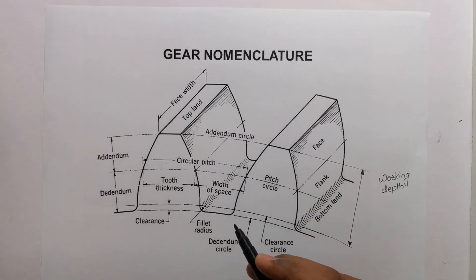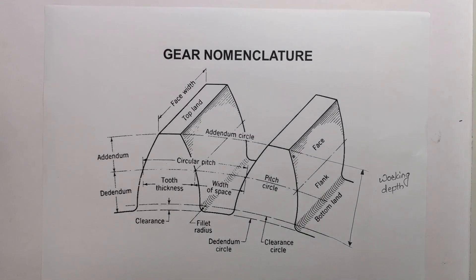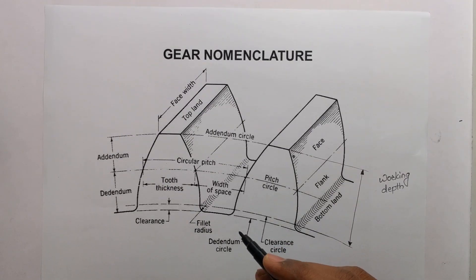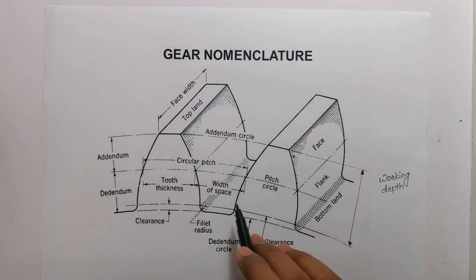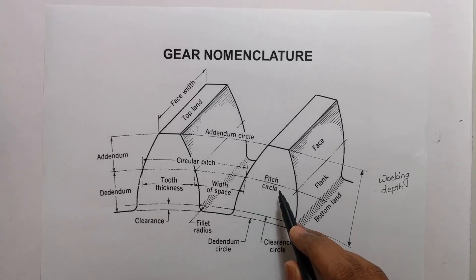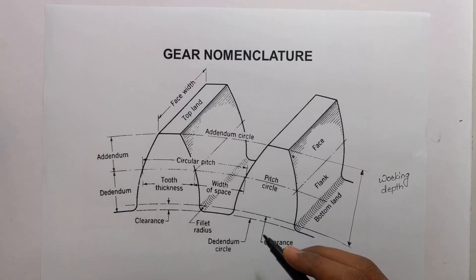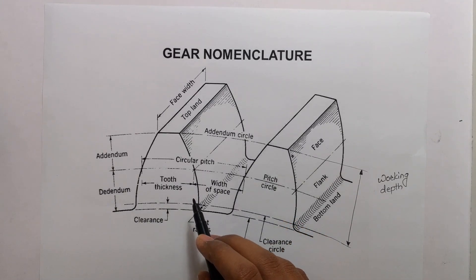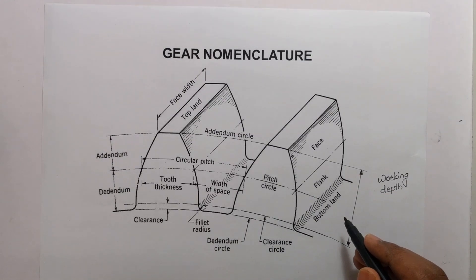Diametral pitch is the ratio of the number of teeth to the pitch circle diameter in millimeters. Module is the ratio of pitch circle diameter in millimeters to the number of teeth — it is the inverse of diametral pitch.